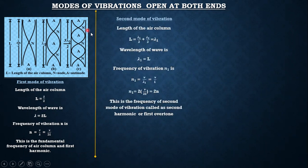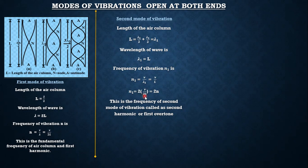For the second mode, capital L equals lambda one, so the wavelength lambda one equals L. The frequency n1 equals v by lambda one, which gives v by L. Multiplying and dividing by 2, we get n1 equal to 2v by 2L, which equals 2n. This is called the second harmonic, or the first overtone, as it comes after the fundamental frequency.